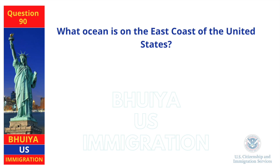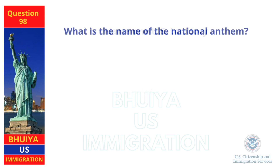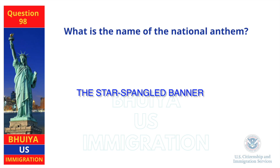What ocean is on the east coast of the United States? The Atlantic Ocean. Name one U.S. territory. Guam. What is the name of the national anthem? The Star-Spangled Banner.